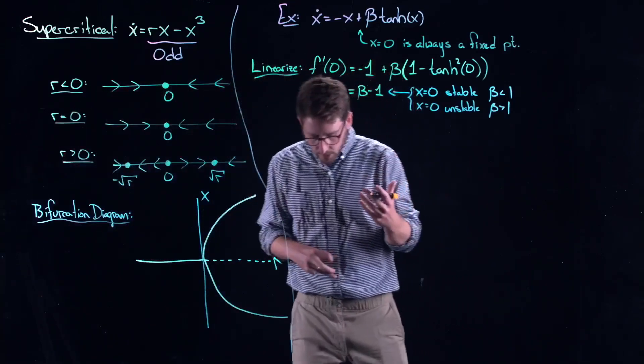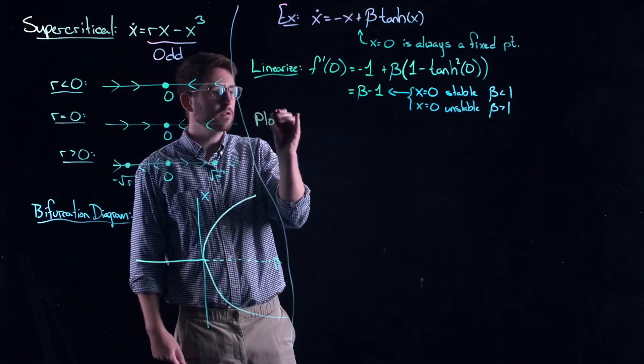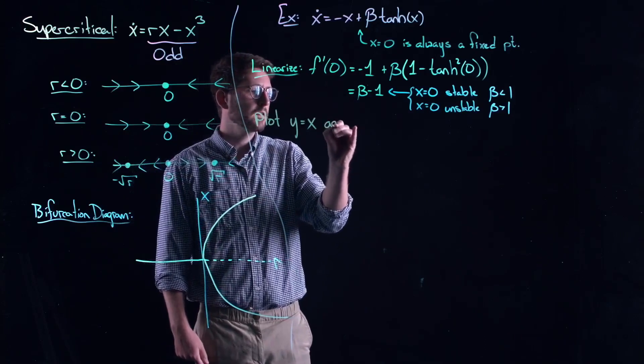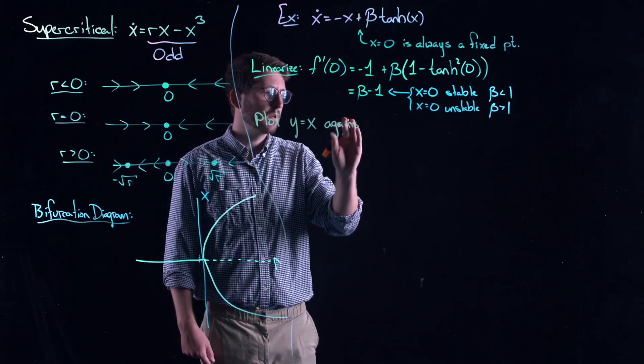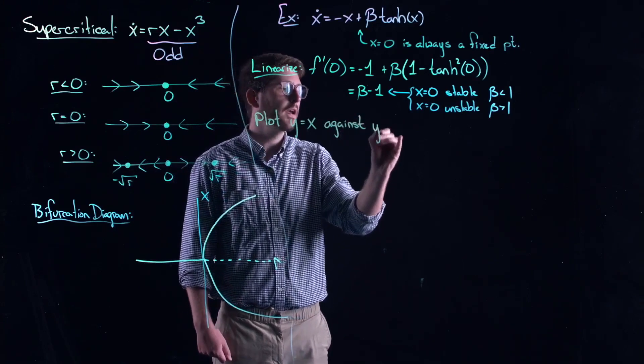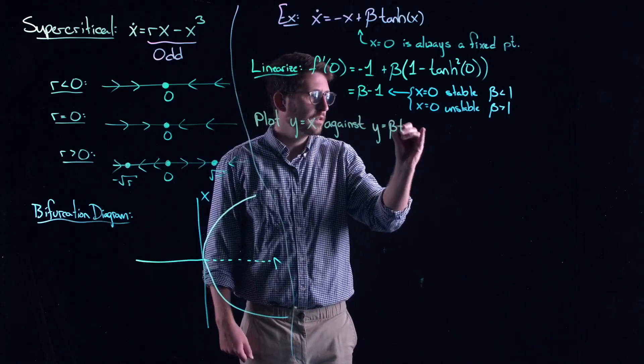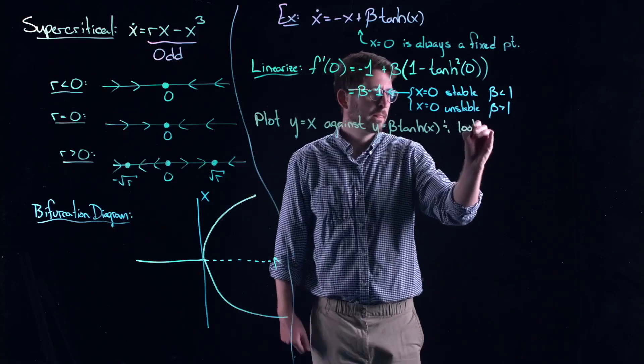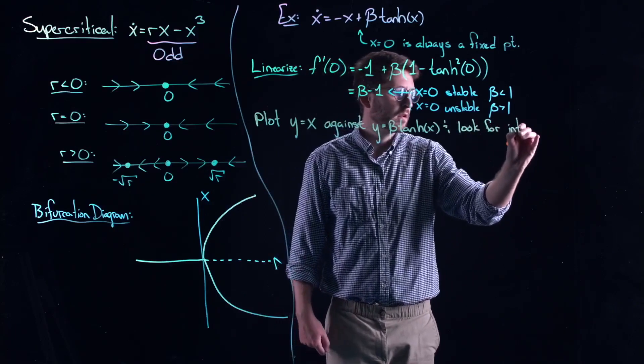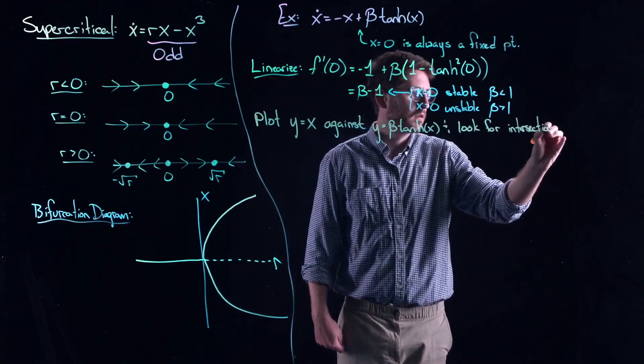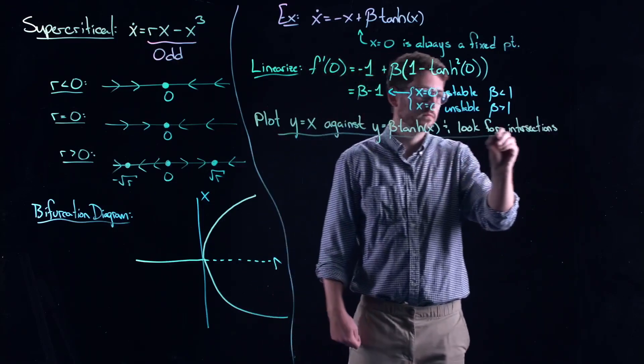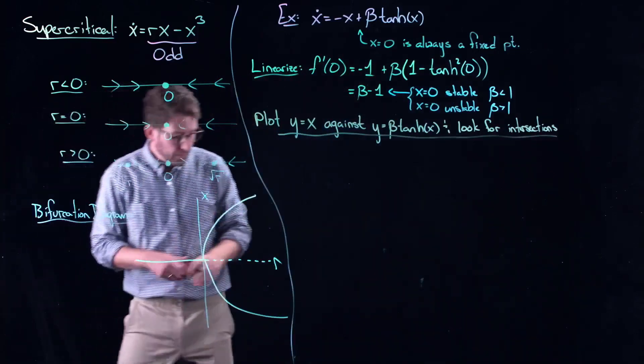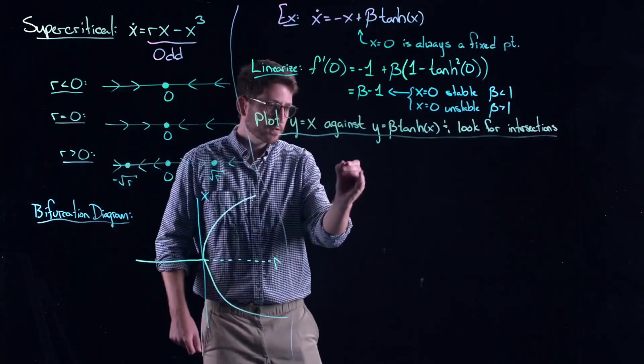Well, next thing that we could do is we could plot this thing. So, we could plot, to visualize, plot y equal to x against y equal to beta hyperbolic tangent and look for intersections. This graphical method of finding fixed points. Well, there's really only sort of two things that happen.